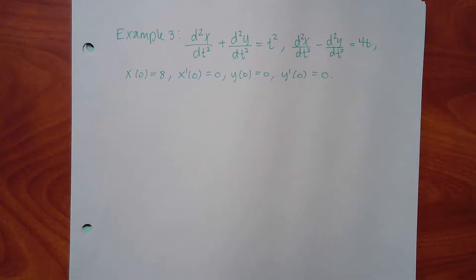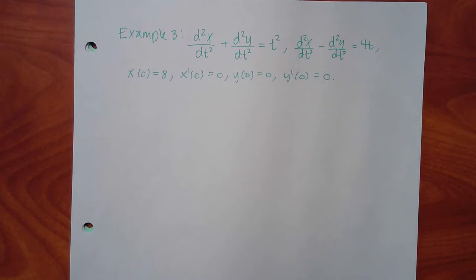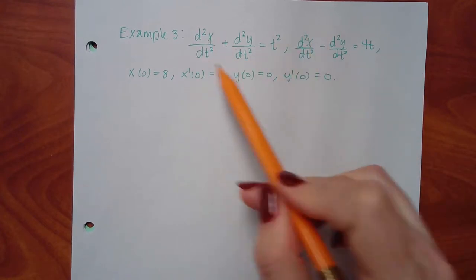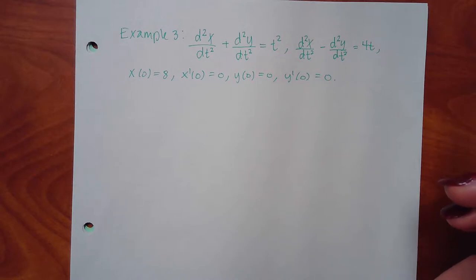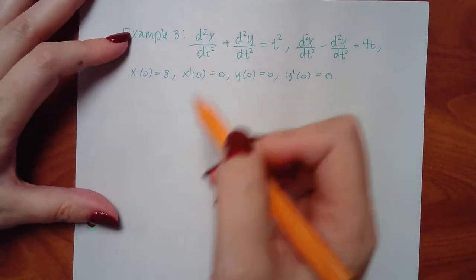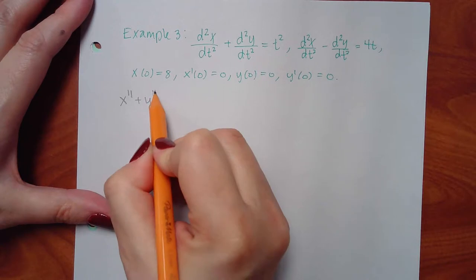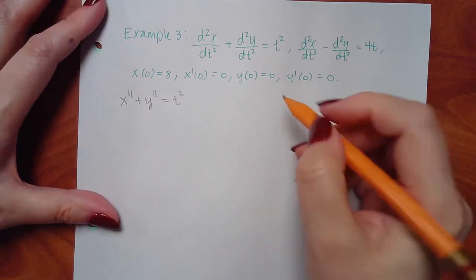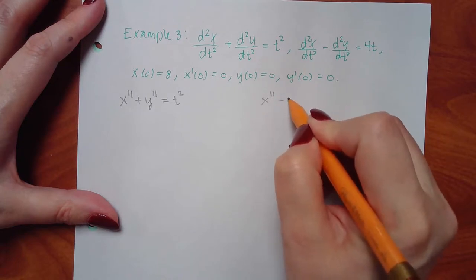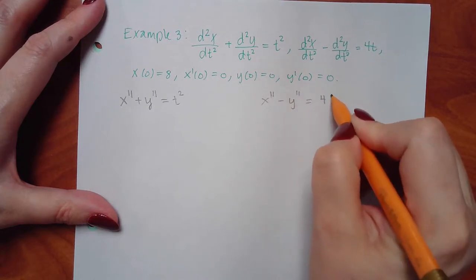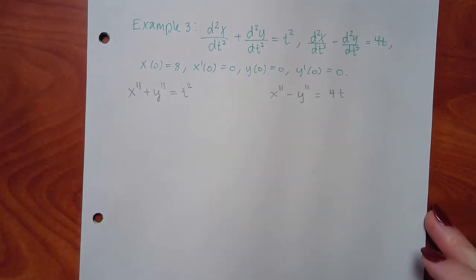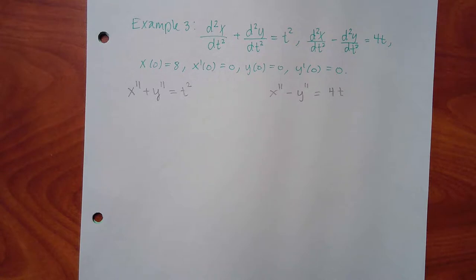This is the last example. I prefer the prime notation, so this system is: x double prime plus y double prime equals t squared, and x double prime minus y double prime equals 4t. We have this system and we need to solve it.